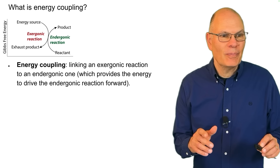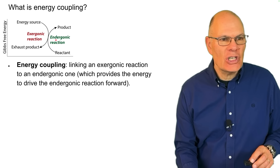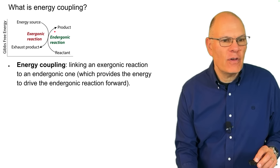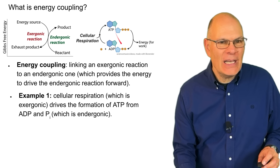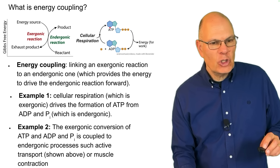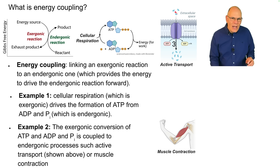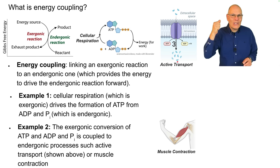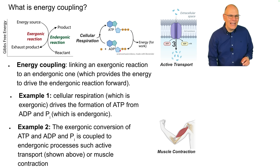What is energy coupling? Energy coupling is the linking of an exergonic reaction to an endergonic reaction, which drives the endergonic reaction forward. For example, cellular respiration — which is exergonic — drives the formation of ATP from ADP and phosphate. And the exergonic conversion of ATP to ADP and phosphate is coupled to endergonic processes such as active transport and muscle contraction.